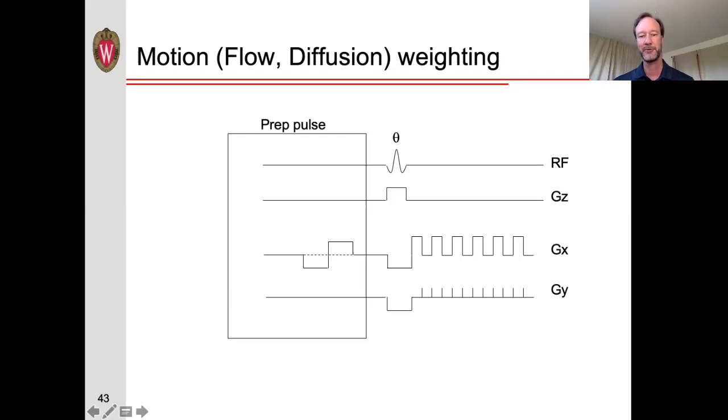However, if the spins are moving, they will have experienced one particular field during this period of time, and then during the opposite period of time, when they would be unwrapped again, they're actually in a different magnetic field, and so the unwrapping is not as successful. So it's not completely unwrapped or maybe unwrapped too much. And so as a result of that, any moving spins will be dephased, and we have less signal for moving spins that are moving in this particular direction.